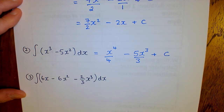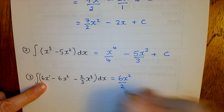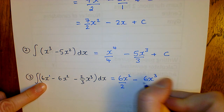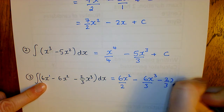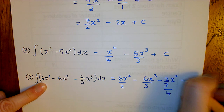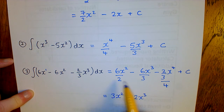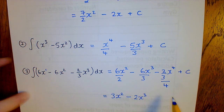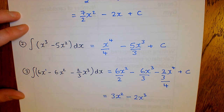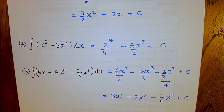Next example: integrating 6x minus 6x squared minus 2/3 x cubed with respect to x. For 6x — that's really 6x to the power 1 — add 1 to get 2, divide by 2. For 6x squared, add 1 to get 3, divide by 3. For 2/3 x cubed, add 1 to get 4, divide by 4. Tidied up: 3x squared minus 2x cubed minus (2/3 divided by 4) x to the power of 4 plus c. That gives us 3x squared minus 2x cubed minus 1/6 x to the power 4 plus c.